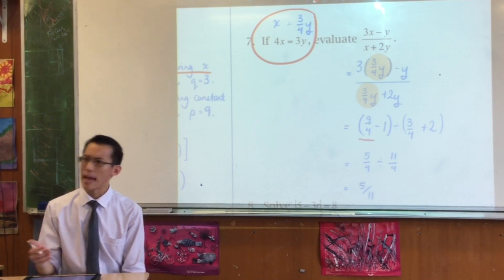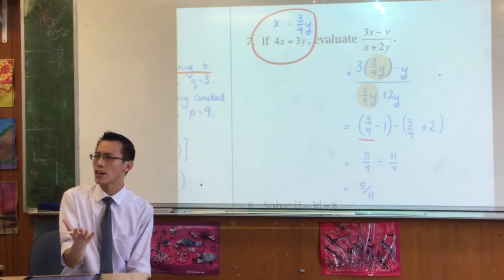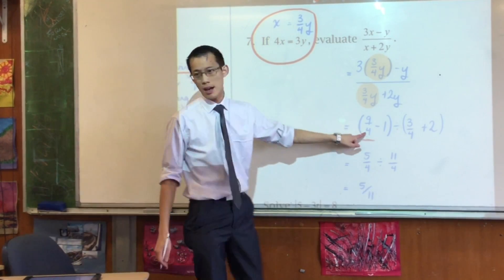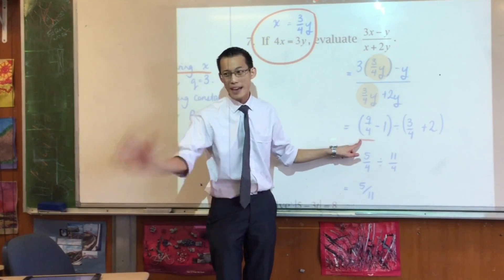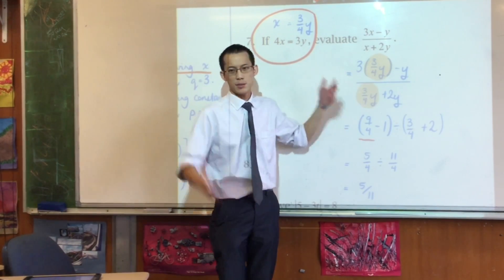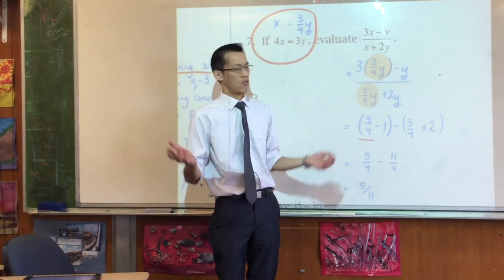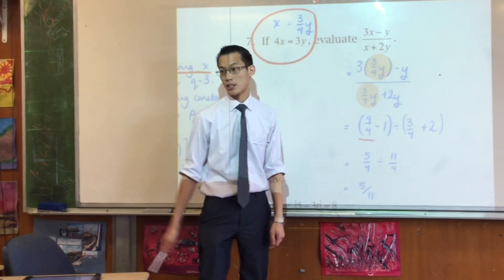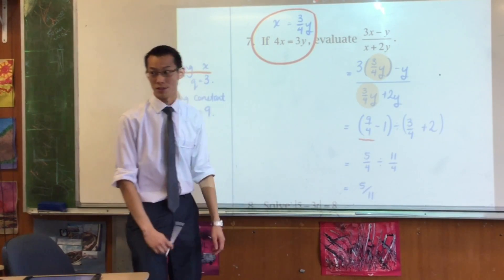Because what happens if you make an error and you're trying to go back and find, oh, where did I go wrong? If this is your first line, that error is twice as hard to find rather than this. It's like, oh, I substituted the wrong thing. Now I see what I did wrong. If you go straight there, it's very hard to locate that. Debug where your solution has gone awry.